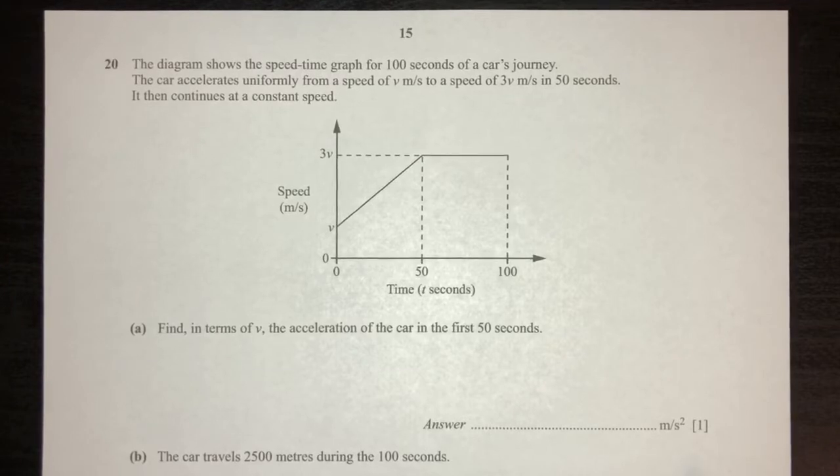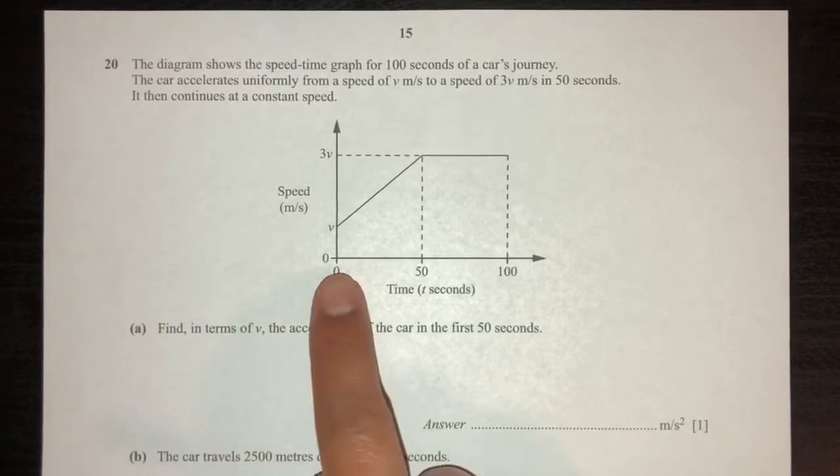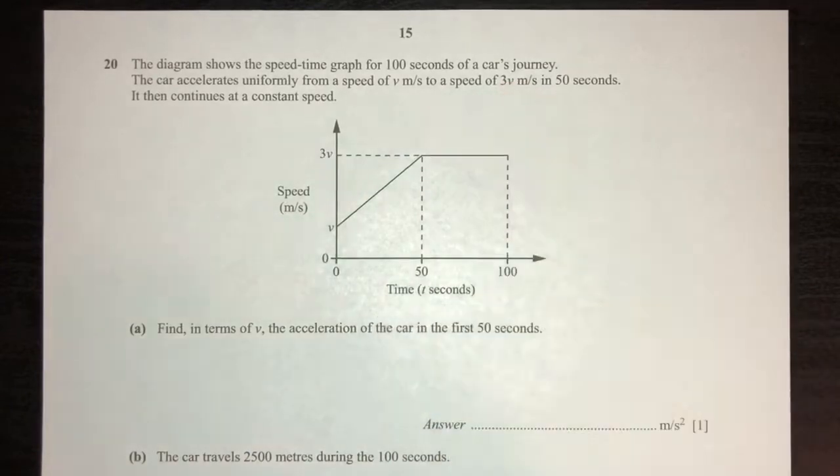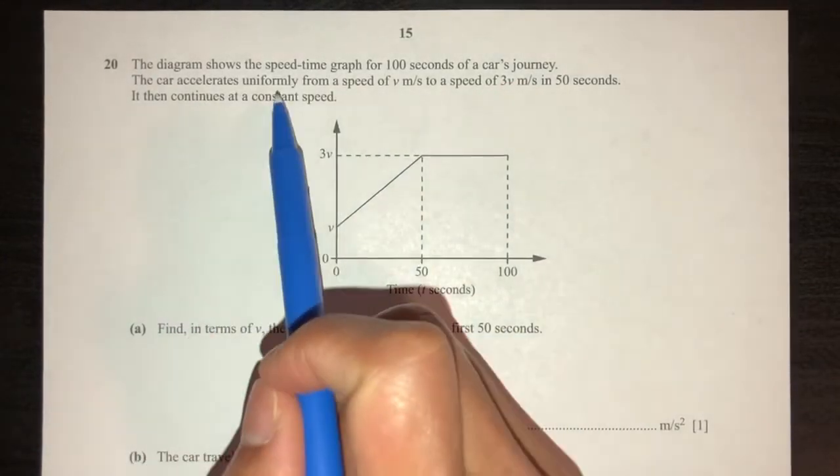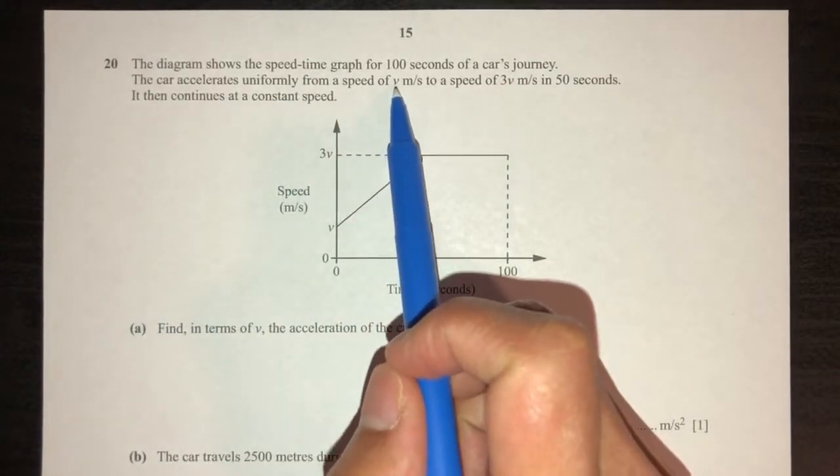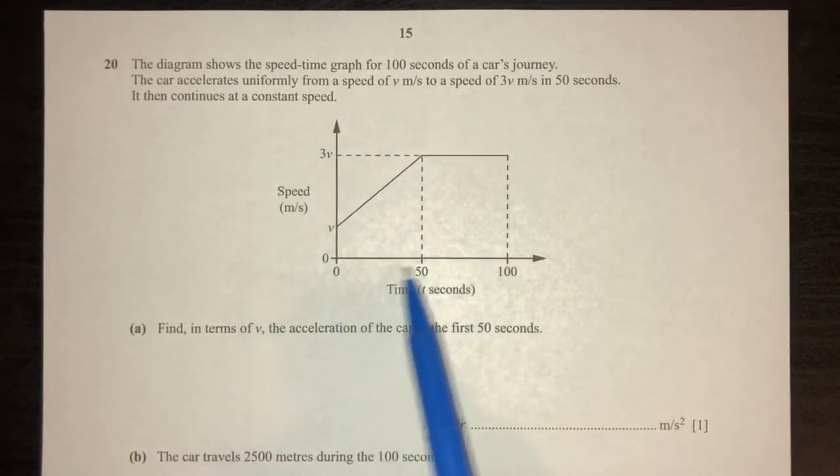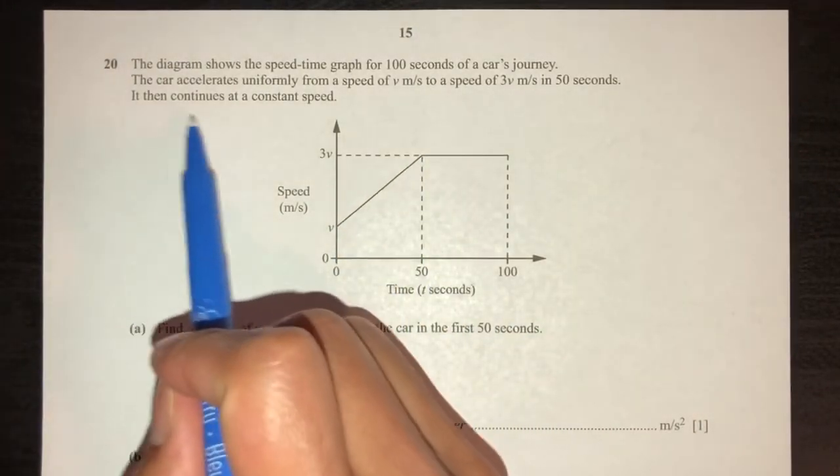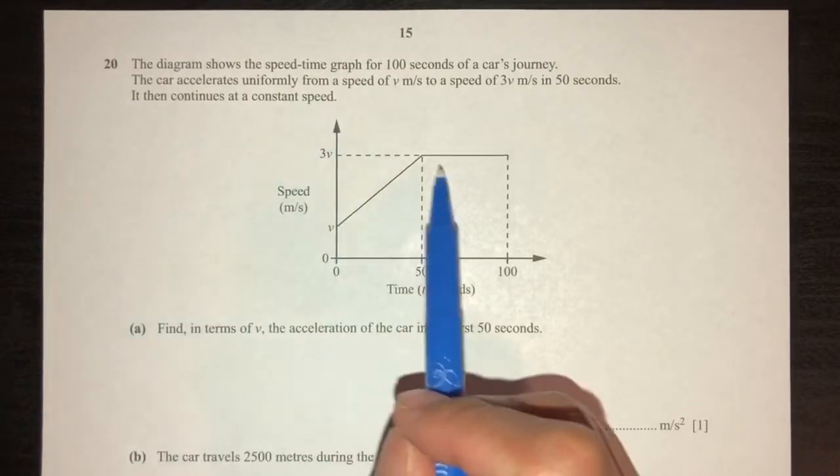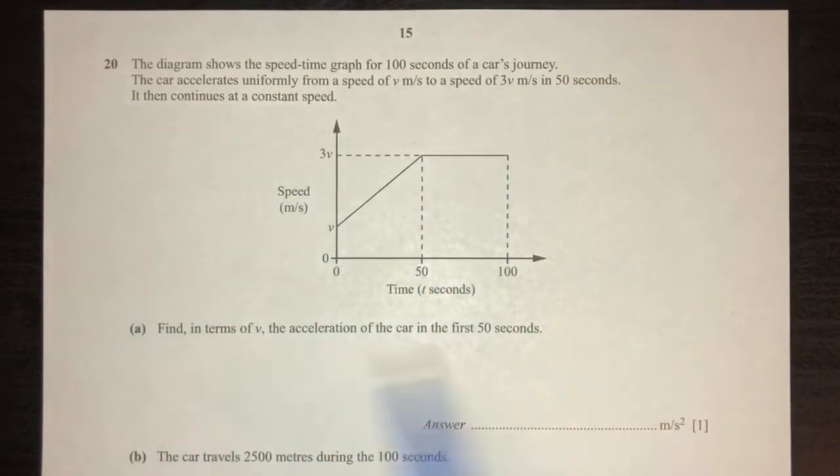So the diagram shows the speed time graph for 100 seconds of a car's journey. The car accelerates uniformly from a speed of V and then went to 3V in 50 seconds. He then continues at constant speed. As you can see, it is constant.